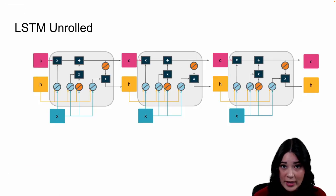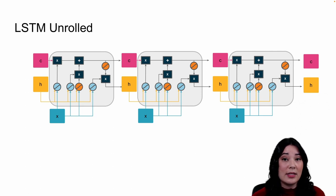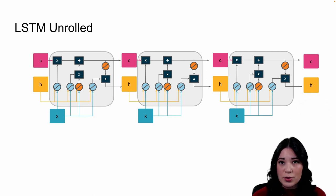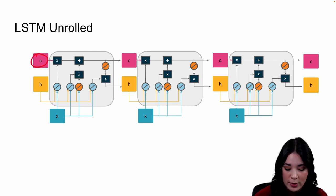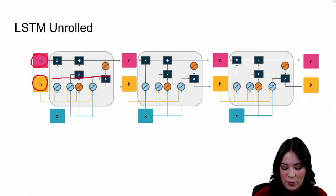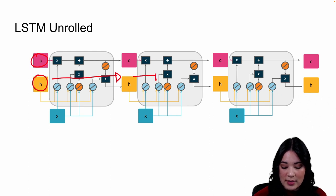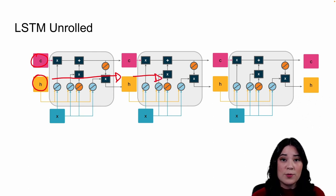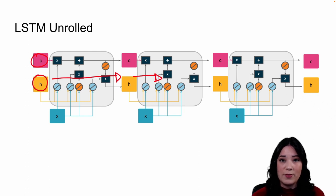Even though it's a more complicated architecture, the ideas behind an LSTM are similar to a recurrent network. We can also show an LSTM unrolled, where we have our input cell state and input hidden state, which go through a bunch of math and output a new cell state and hidden state, which is then fed into the next cell in the sequence. This is repeated over and over until the end of the sequence, where we get our outputted values.